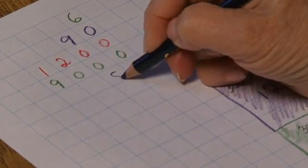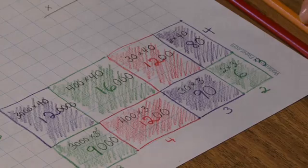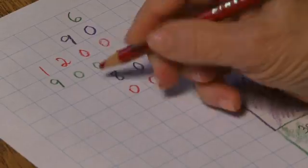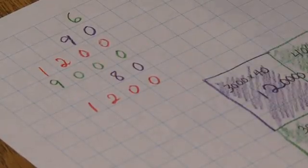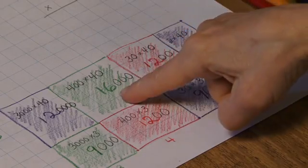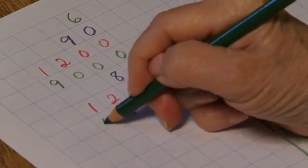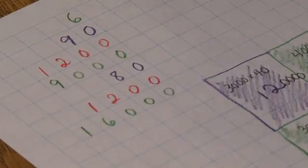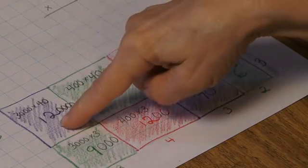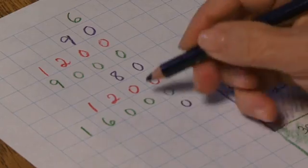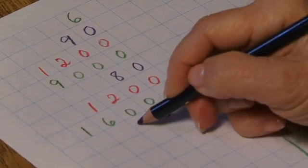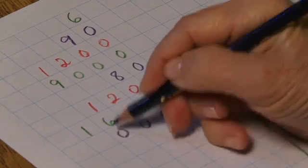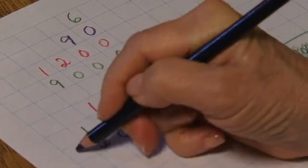And now I'll record this row of calculations. 8 tens or 80, 12 hundreds, 16 thousands, 12 ten-thousands, so the 2 is in the ten-thousands place.